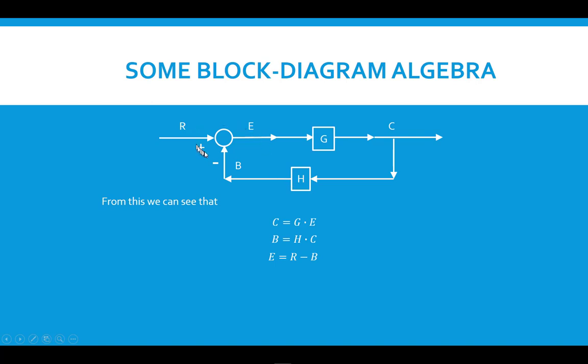And then also up here at the top we have this comparator. It's just a summing junction with one of the inputs being negative. So we're taking the difference between R and B, and that's called E, which is the error, which is the input into the feedforward path of the system. What we want to do is get the closed loop transfer function, which would be the single block equivalent of this loop. And a transfer function is simply defined as its output over its input.